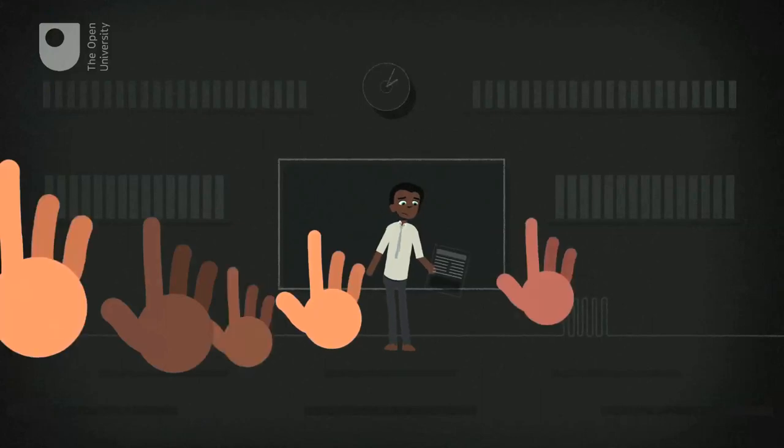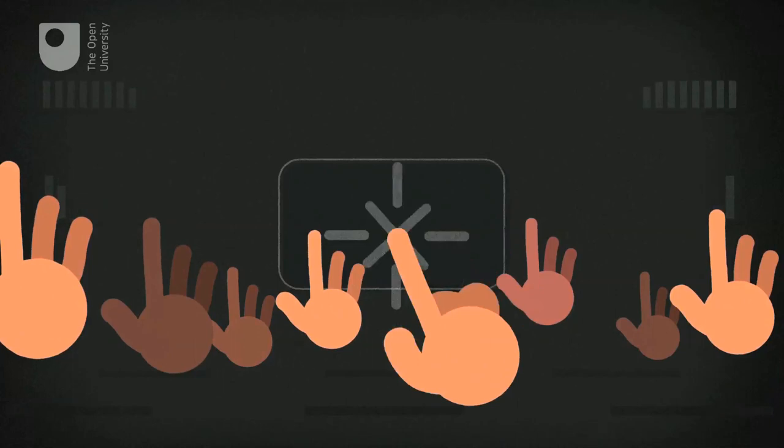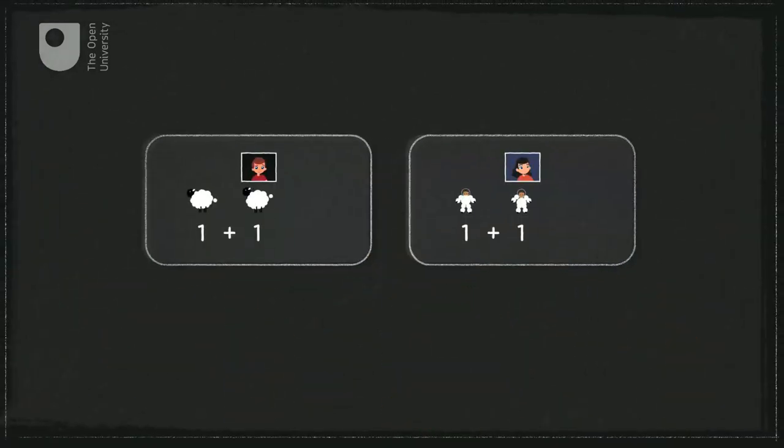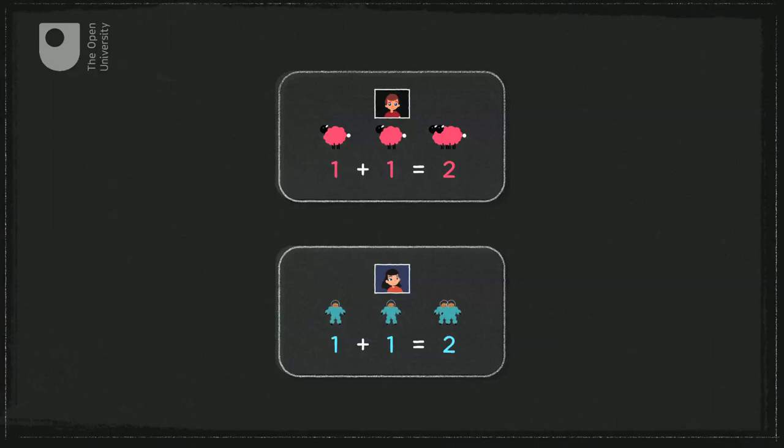Teachers often struggle to support the needs of children in classes that are growing in number. Innovators have demonstrated how technology can help address this problem by tailoring learning to individual children's interests and needs. In this educational revolution, technology can make learning more entertaining and engaging, allowing each child's progress to be closely monitored and offering regular rewards to maintain their attention.